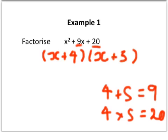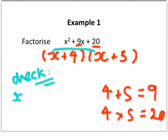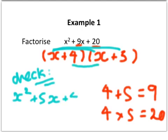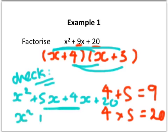Now what we can do here is check to make sure that our answer's correct. All we do is multiply out. So x times x is x squared, x times 5 is 5x, 4 times x is 4x, and 4 times 5 is 20. When we tidy that up, we get x squared, 5x and 4x is 9x, and the 20 on the end. So we know we're correct.